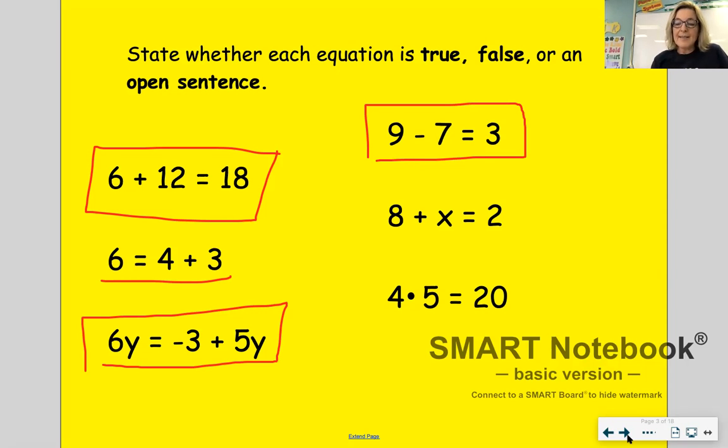8 plus x equals 2 would be considered an open sentence because it has a variable. 4 times 5 equals 20 is equal to, 4 times 5 is 20, so it would be considered a true equation.